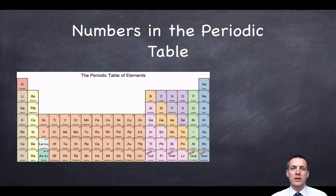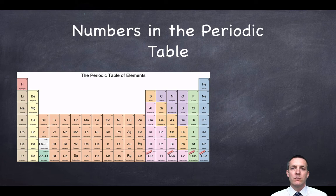We're going to start off by looking at a few different periodic tables to see where to find these two numbers. The annoying thing about periodic tables is that depending on the periodic table, they put these numbers in different places. So we're going to have to find a different way of figuring out which number is which, rather than by looking at where they are.